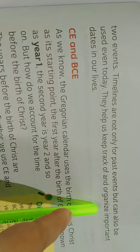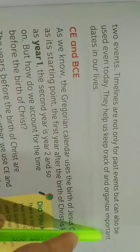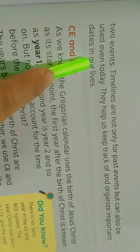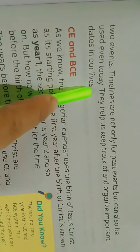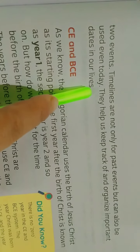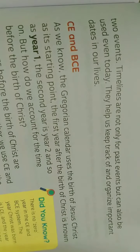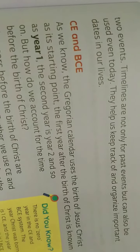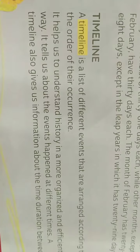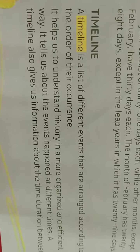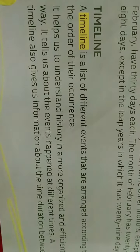Timelines are not only for past events but can also be used even today. They help us keep track of and organize important dates in our lives. So, a timeline is a list of different events.